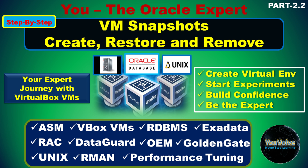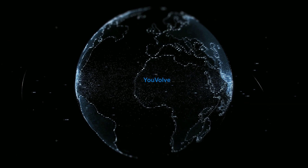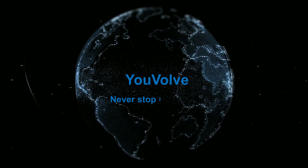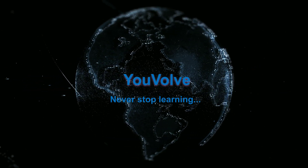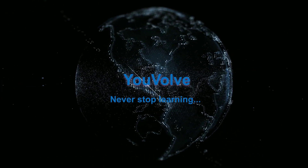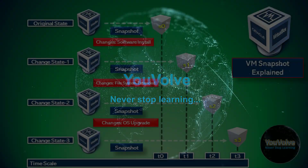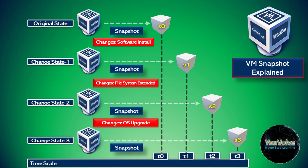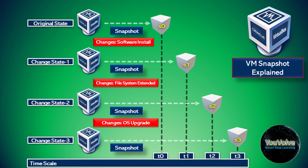What is a snapshot? What is a VirtualBox virtual machine snapshot? A snapshot is a state of the virtual machine at a particular point in time, which is recorded by the VirtualBox application. A snapshot enables you to recover a virtual machine from an unwanted change.